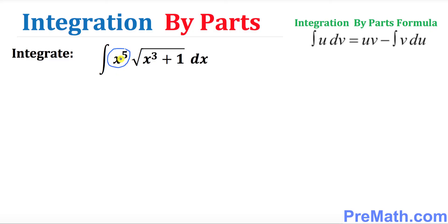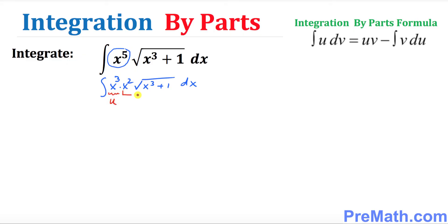Let's make one trick over here. Can we write x⁵ as x³ times x²? Same thing, isn't it? And leave everything as it is: x³ + 1 dx. So over here, we're going to say that this x³ is our u and this whole thing is our dv.